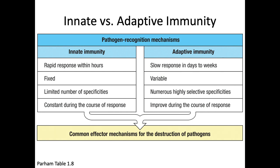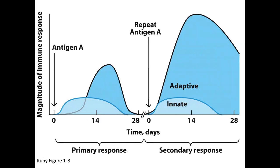You can see the timing and improvement in this image. Following a first infection, the innate immune response — shown in lighter blue — is the only thing doing much early on. Then later, the adaptive immune response gets its act together and participates. The second time around, the innate immune response looks basically identical to the first time, but the adaptive immune response is bigger, faster, and stronger. It has adapted.